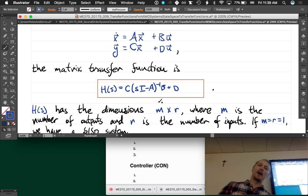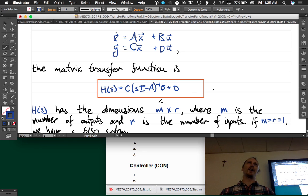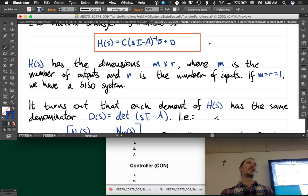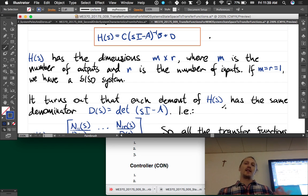So if M and R are both one, you have one input and one output and we have a SISO system. It turns out that each element of H(s) has the same denominator. It's just a property of this algebraic expression, this linear algebraic expression, that all of the elements of H(s) have the same denominator.